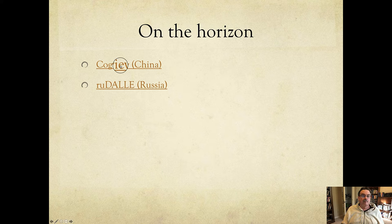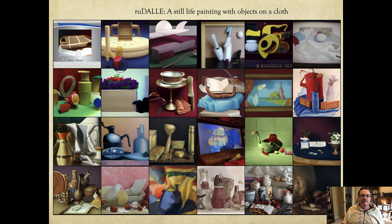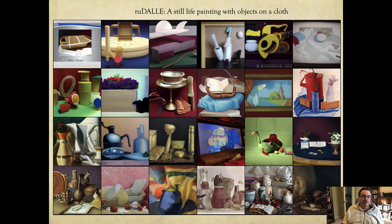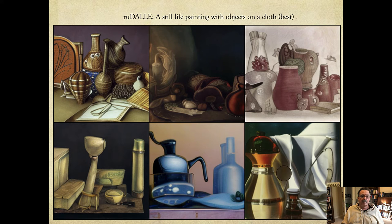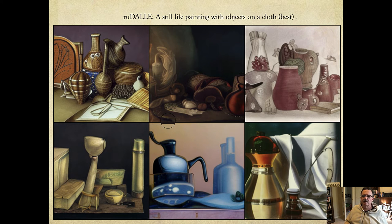A lot of interesting things are happening around the world. With ruDALL-E, I entered 'a still life painting with objects on a cloth' and it came up with this mosaic of different images and did a pretty good job. These images don't exist anywhere but in the dreams of ruDALL-E, and I think what the Russian group has done is just fantastic. Here's another example from ruDALL-E — the notebook gives you a bunch of images and a selection of the so-called best.